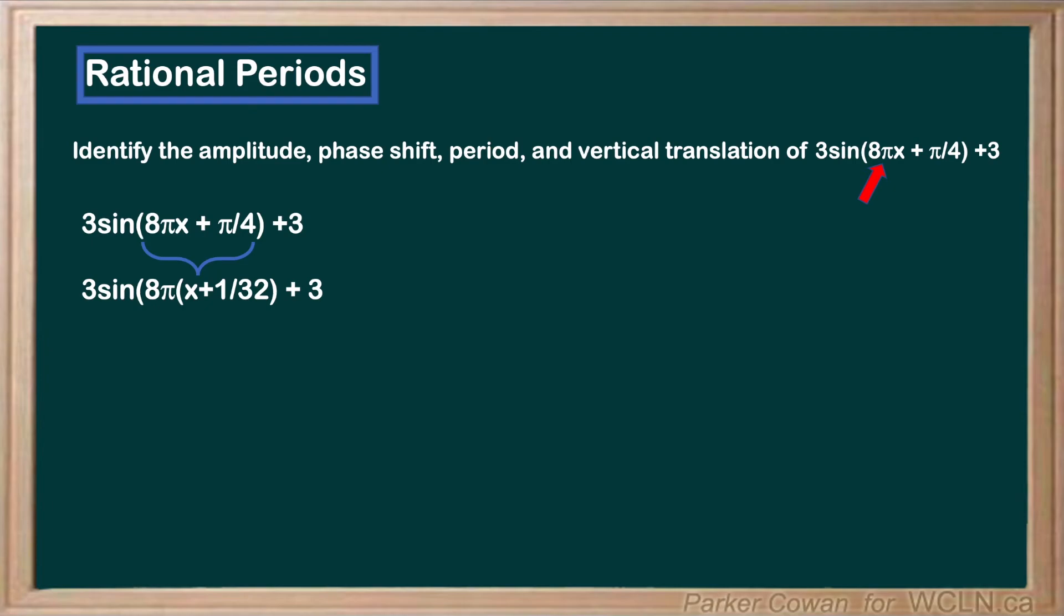So, now that x is out on its own, we can take that 8π coefficient and plug it into our period equation. So, period is equal to 2π over 8π. This gives us a period of 1 over 4, which as expected, is a rational number.